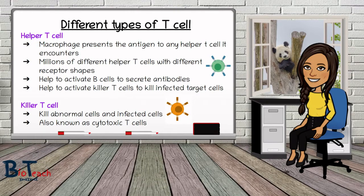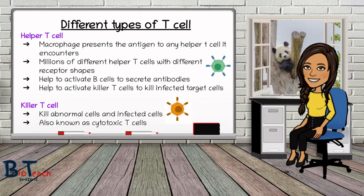That's why it actually takes some time before the immune system starts to respond to infection, by which time you're already feeling unwell. Once the appropriate T-helper cell is activated, it stimulates other T-cells and divides to produce a large colony of specific T-cells by the process of mitosis. The name 'helper' is appropriate because it helps to activate B-cells to secrete antibodies and also helps to activate killer T-cells or cytotoxic T-cells to kill infected target cells.